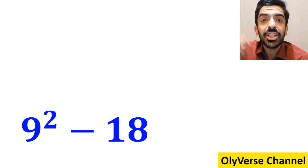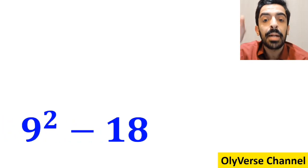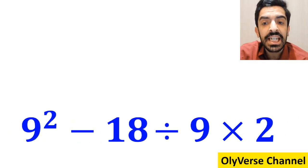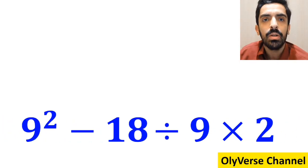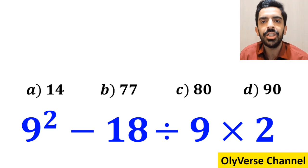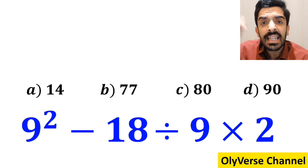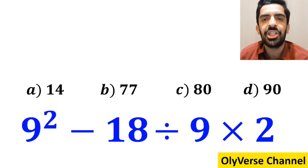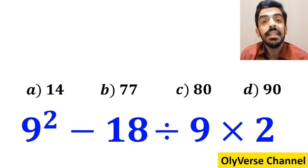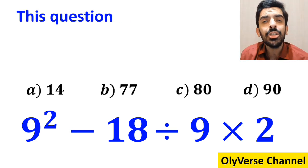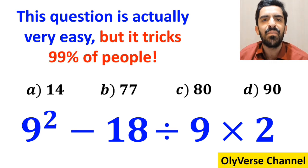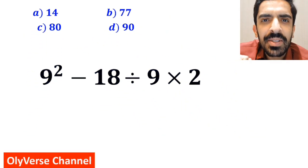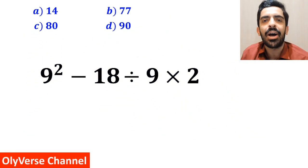What is the value of the expression 9 squared minus 18 divided by 9 times 2? Which option do you think is the correct answer? This question is actually very easy but it tricks 99% of people. Let's break it down and solve it together.